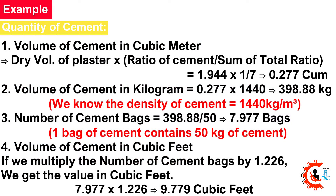Quantity of Cement: Volume of cement (m³) = Dry volume × (ratio of cement / sum of ratio) = 1.944 × (1/7) = 0.277 m³. Volume of cement in kg = 0.277 × 1,440 = 399.88 kg.